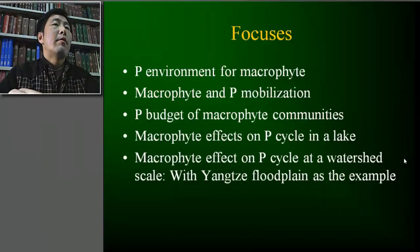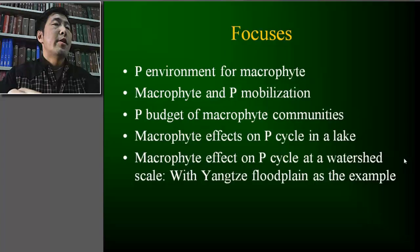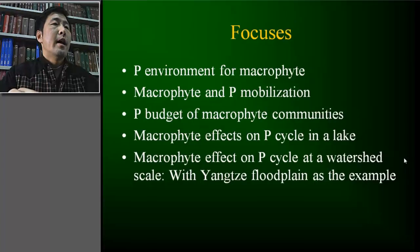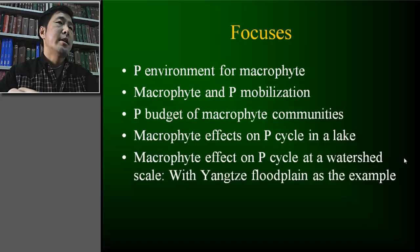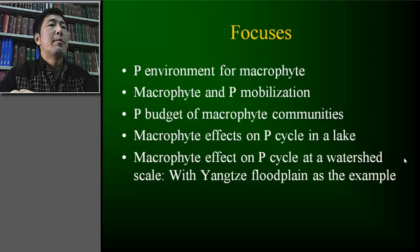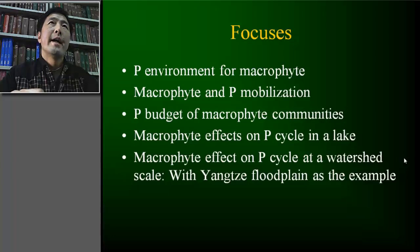In this talk, I will focus on five sections. The first four sections mainly summarize briefly the current knowledge about macrophyte and phosphorus relationships. In the last section, I want to propose a hypothesis describing the macrophyte effect on phosphorus cycle at a watershed scale.